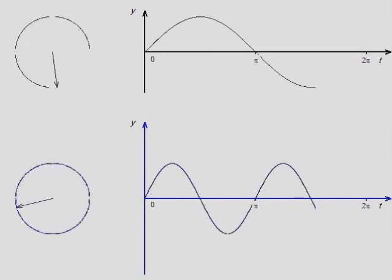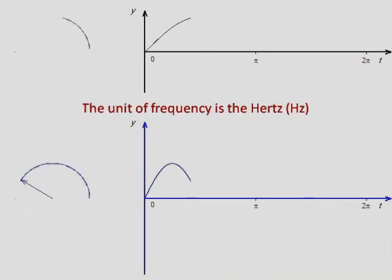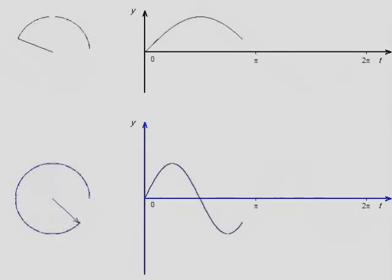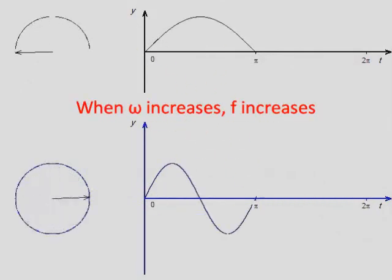The unit of frequency is commonly given in hertz. This shows that the angular velocity and the frequency are directly proportional. When one increases, the other also increases, and vice versa.